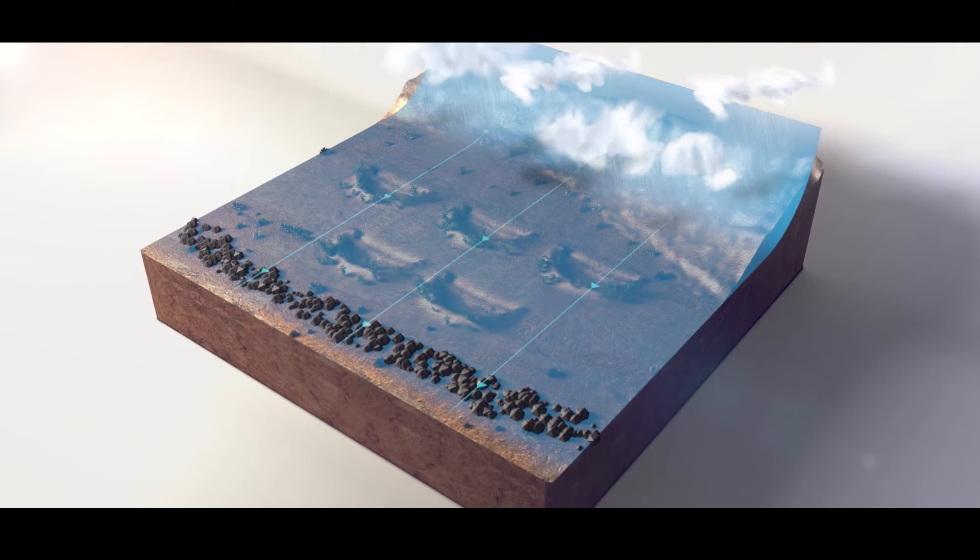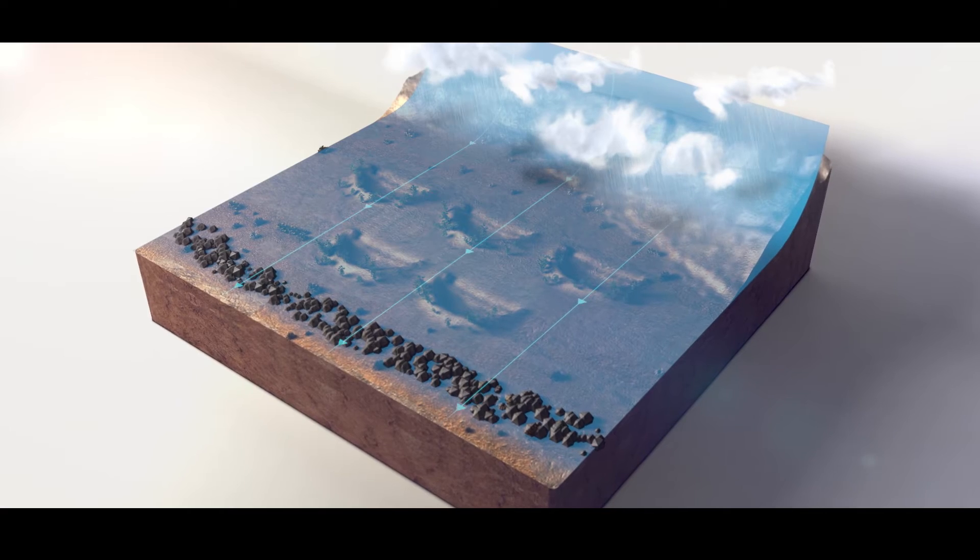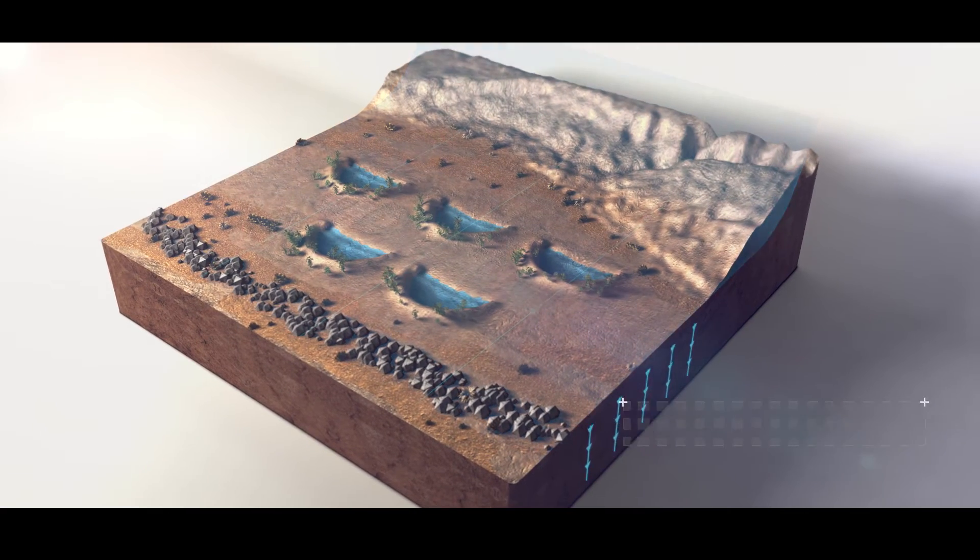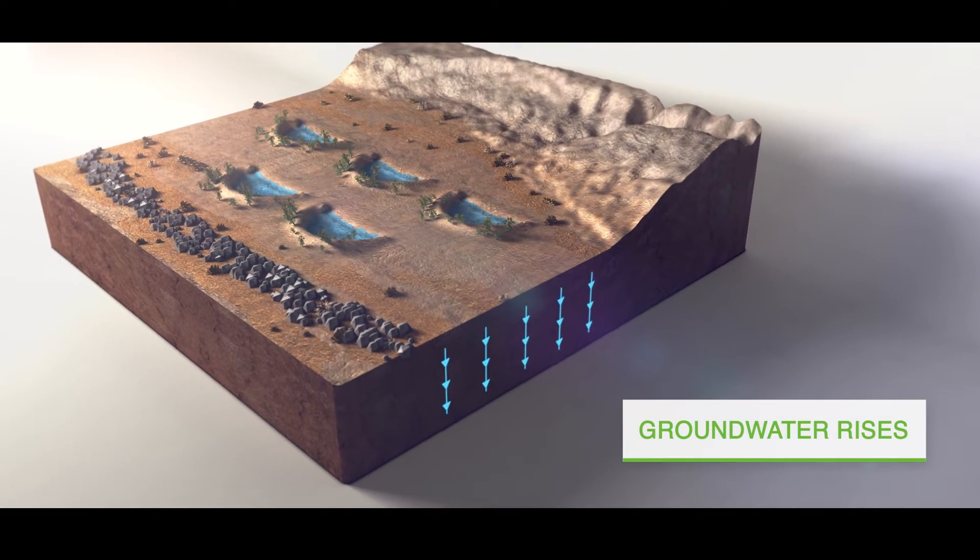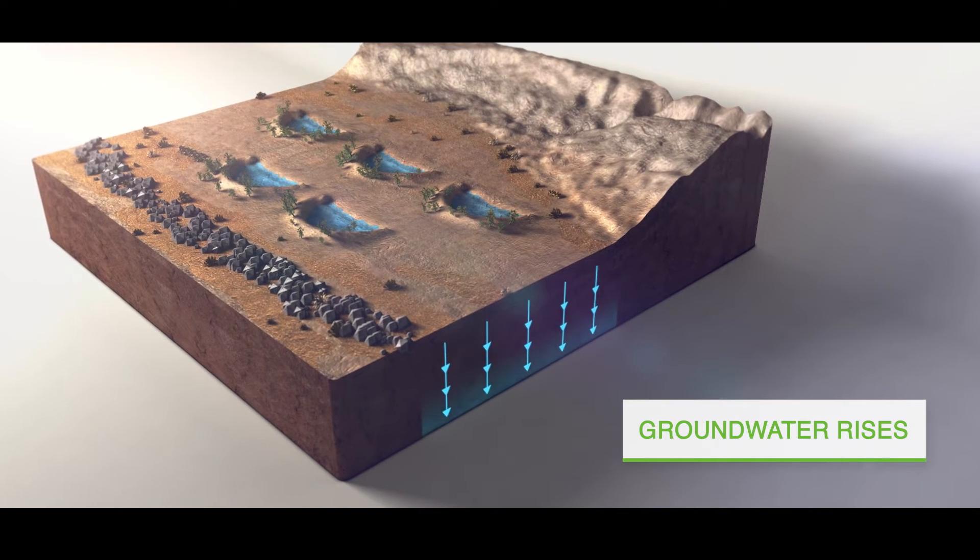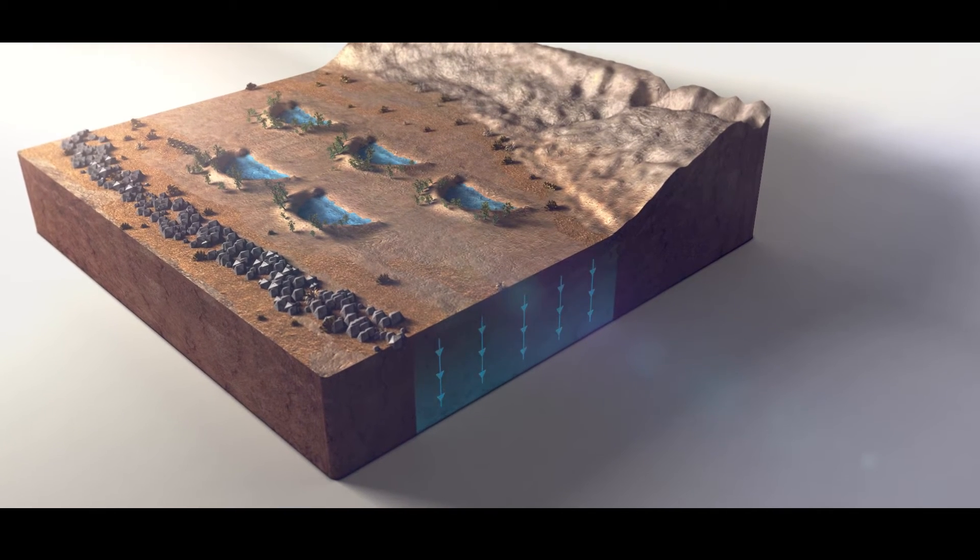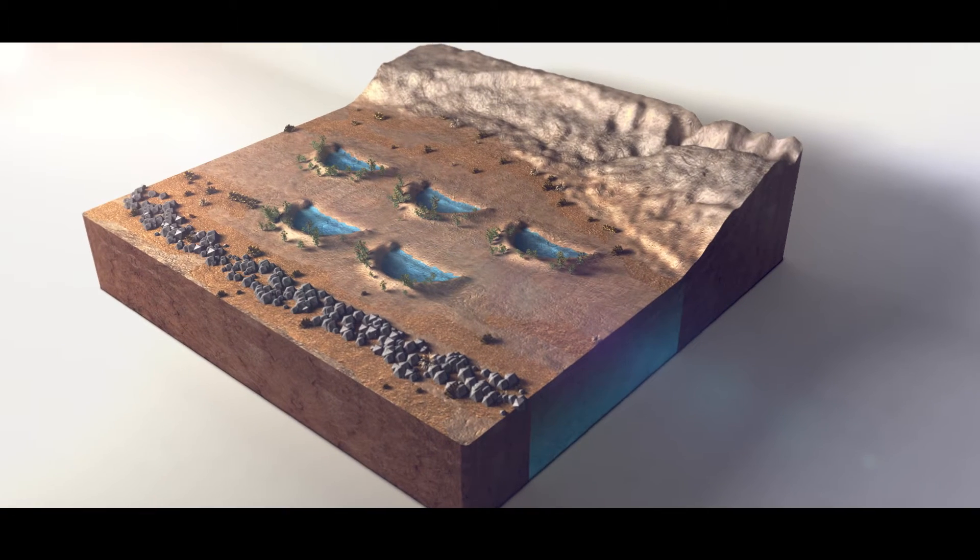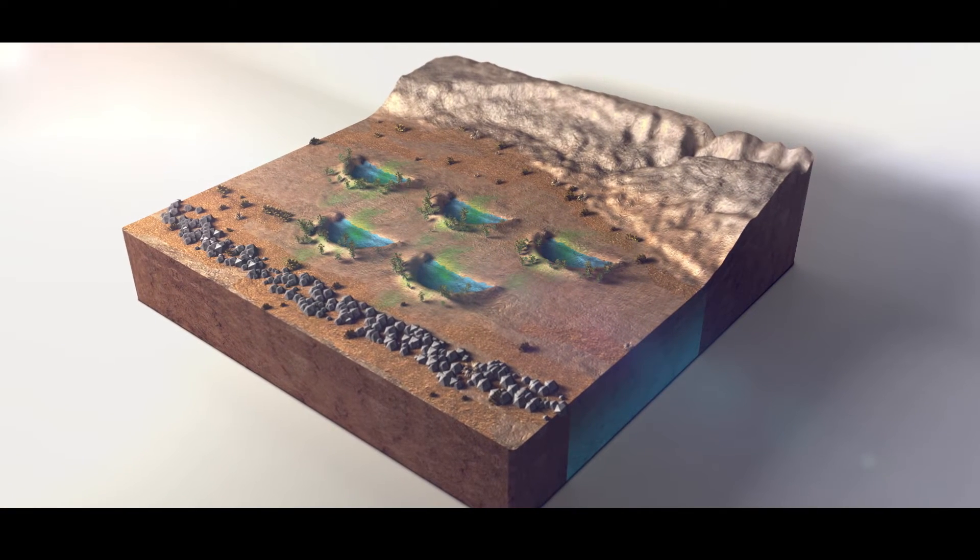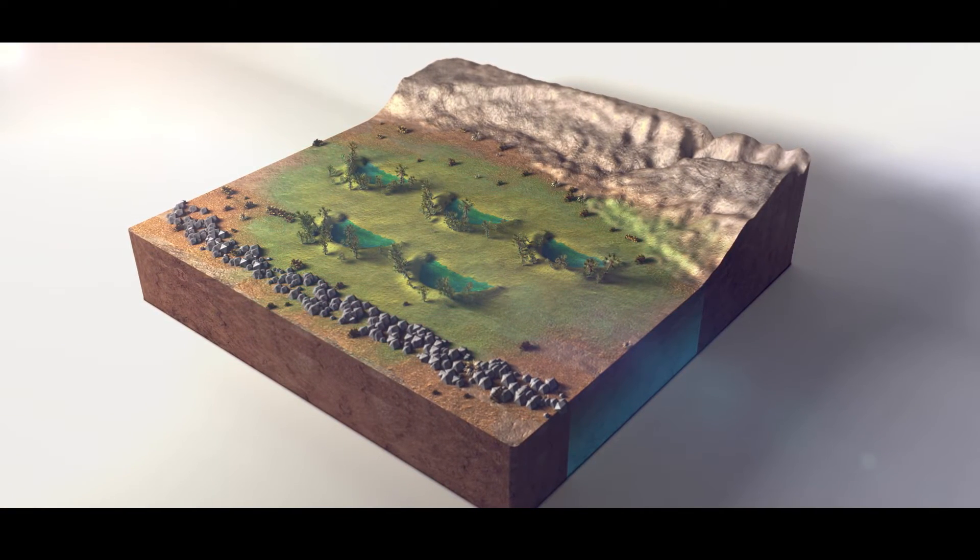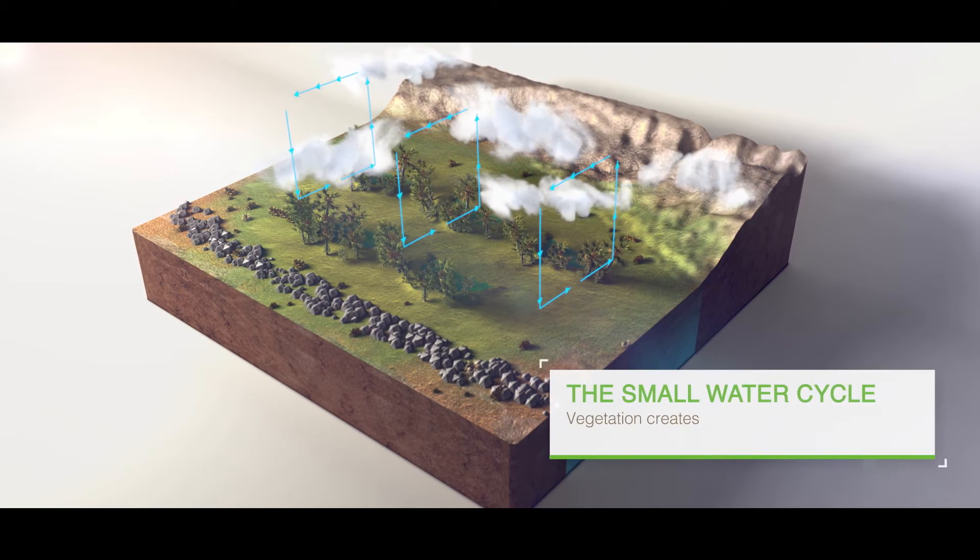We start with infiltration of rainwater to stop flooding and erosion. We complement this with agroforestry and climate-resilient agriculture, thereby replenishing the aquifer. The vegetation returns and the process of evapotranspiration starts again.